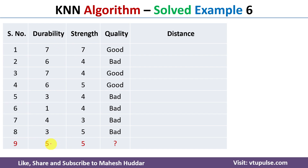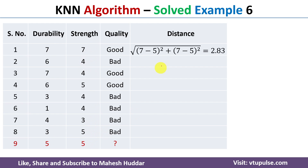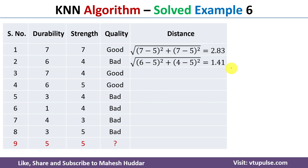For the first training example: √((7-5)² + (7-5)²) = 2.83. For the second training example: √((6-5)² + (4-5)²) = 1.41. We similarly calculate the distance from the new example to all other training examples.